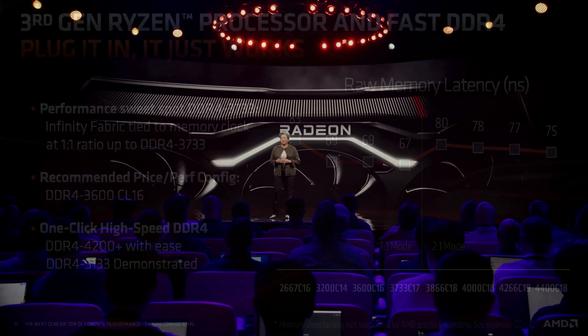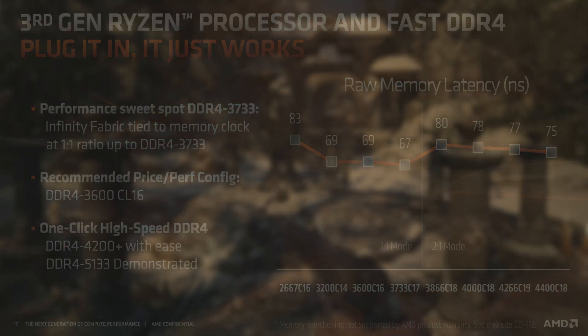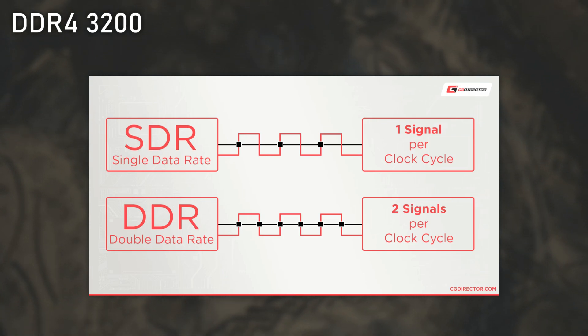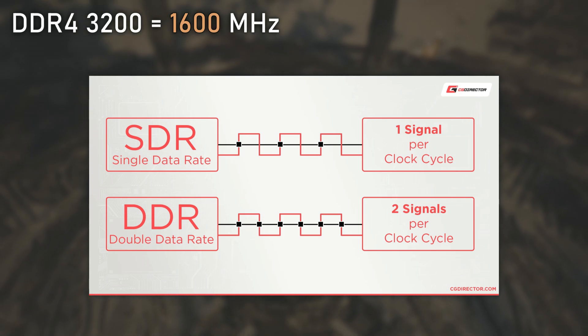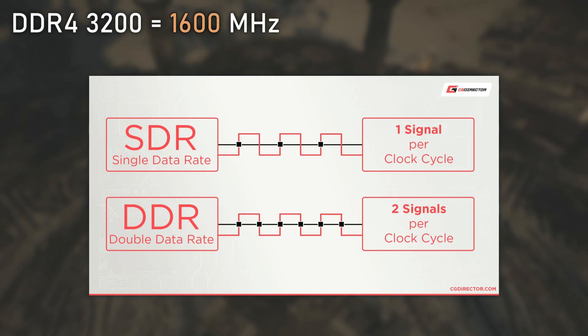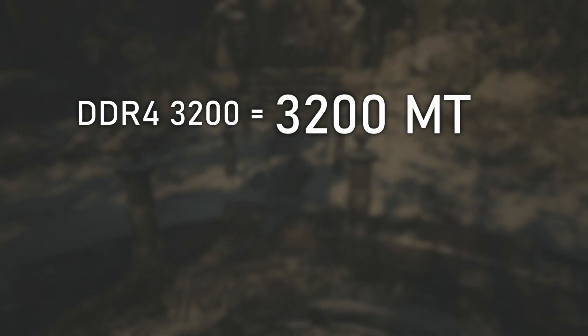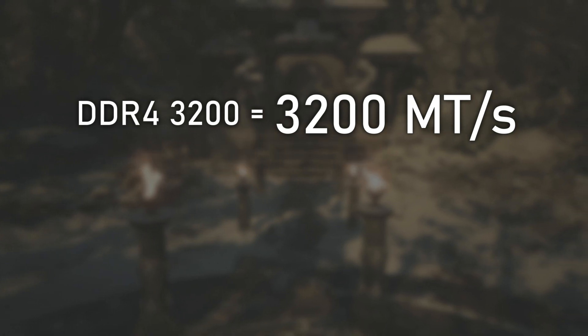In terms of frequencies, Infinity Fabric's frequency is directly connected to your DDR RAM frequency. For example, imagine you have a DDR4-3200. DDR is an acronym for Double Data Rate, meaning that your RAM's true frequency is in fact half of those 3200, which is 1600 MHz. In fact, those 3200 are megatransfers per second and not MHz, but that's a topic for another video.